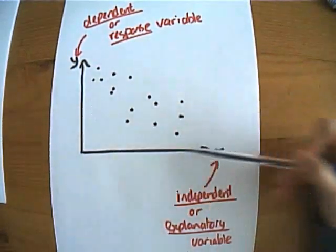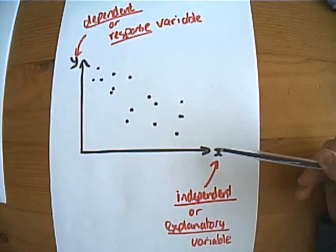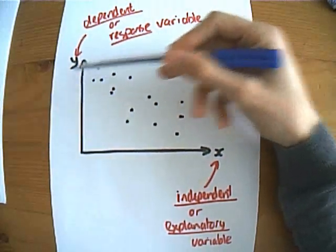In other words, if I knew what the value of x was, I could come up with a decent estimate for what a value of y was, or vice versa.